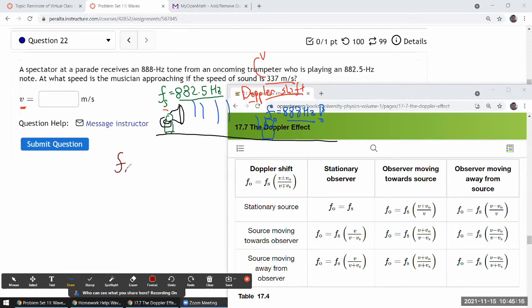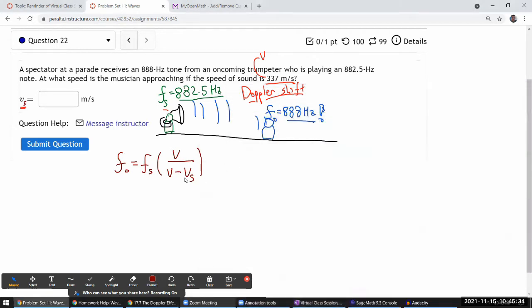The frequency observed is equal to frequency at the source times the speed of sound divided by speed of sound minus the speed of the source. So this is the speed of the source. So I'm just going to take this expression and solve it for speed of the source.